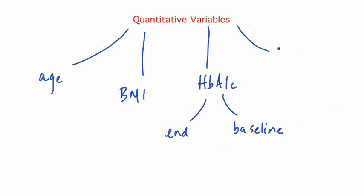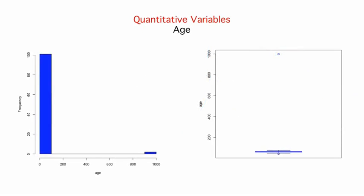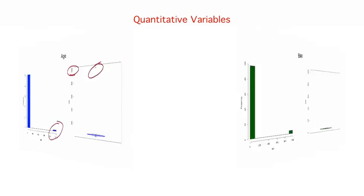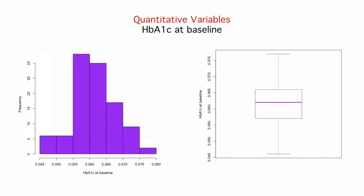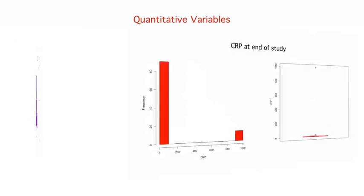Now we can take a look at our quantitative variables. They are age, BMI, HbA1c measured at the end and at baseline, and CRP, also measured at the end and at baseline. Starting with age, we can see that there's something funny going on here. There's a huge outlier, which is an age close to 1000, and clearly a mistake. Flipping through all our quantitative variables, we see the same phenomenon for BMI and HbA1c at the end of the study, although not for HbA1c at baseline. And here it is for CRP, both at the end of the study and at baseline.